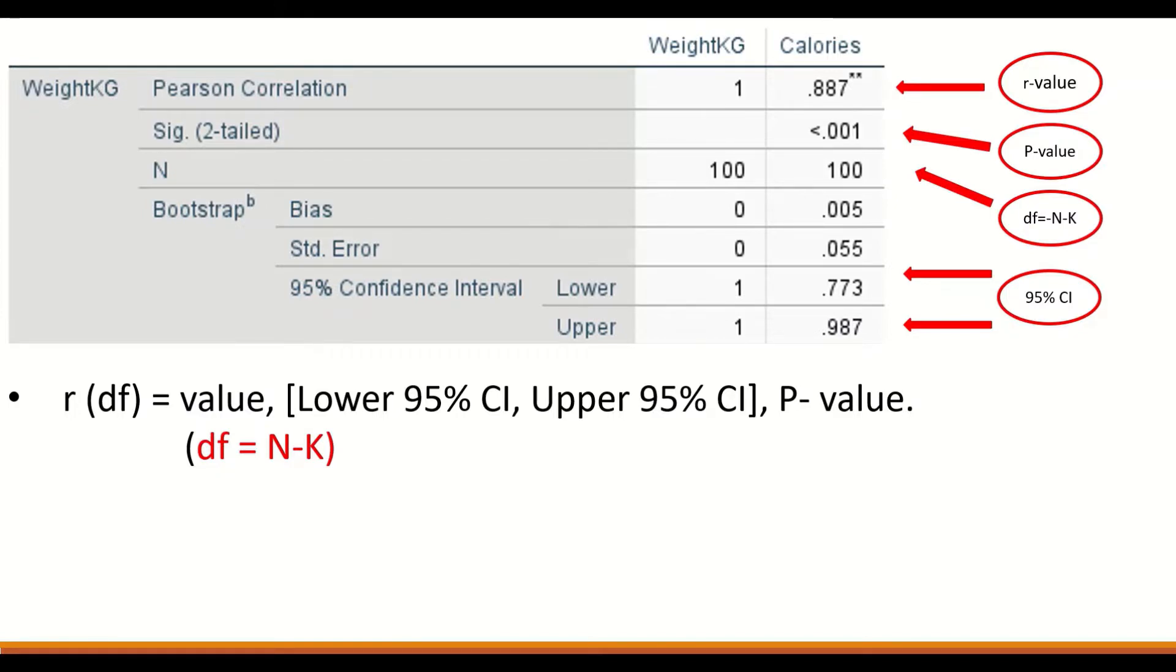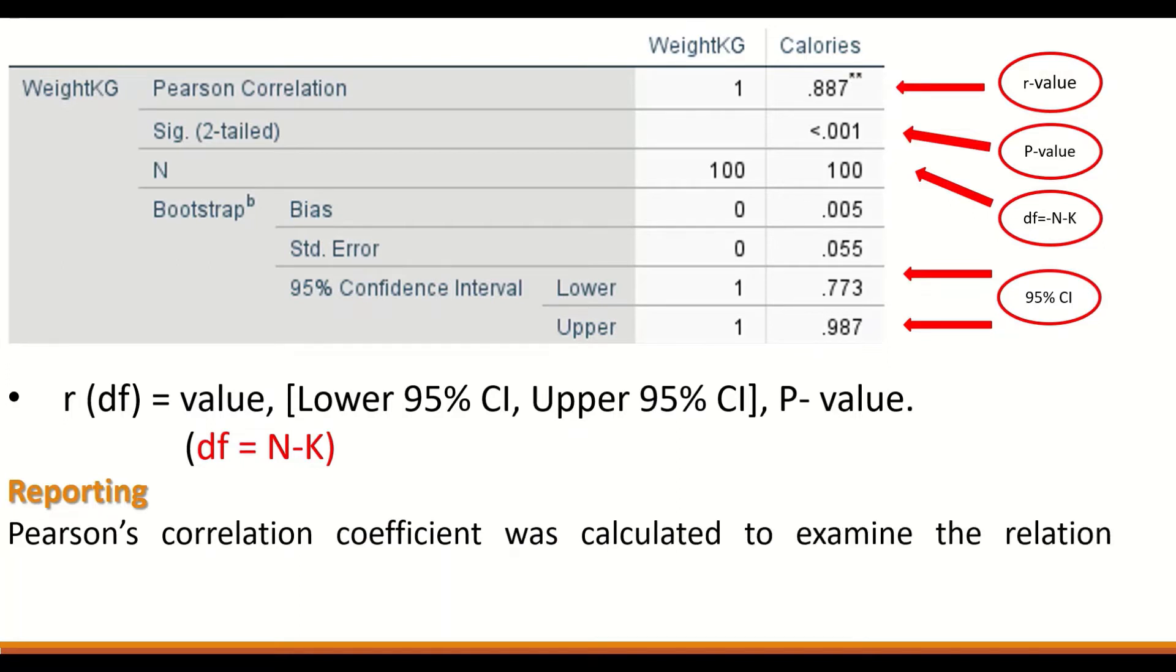How do we write this in text format to place it in a document? We report it as follows: Pearson's correlation coefficient was calculated to evaluate the relationship between weight and calories consumed.